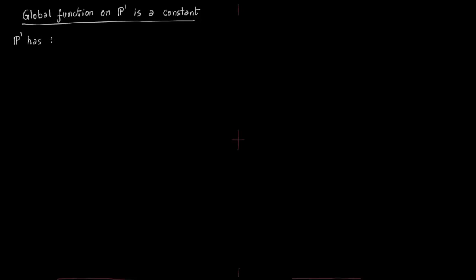First of all we need to talk about coordinates of P1. The coordinates of P1 are x0 and x1. Now we talk about the open covering of P1. The first open set is U0, where x0 is not equal to 0, and U1, where x1 is not equal to 0.